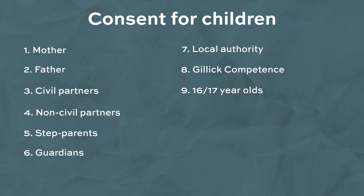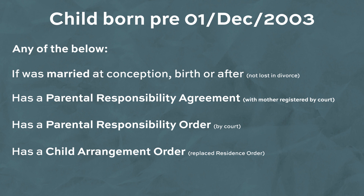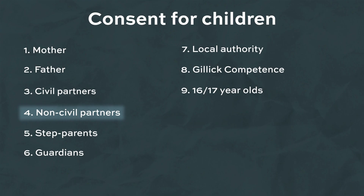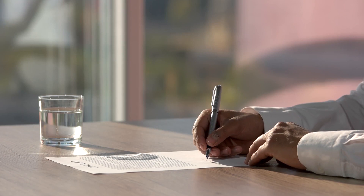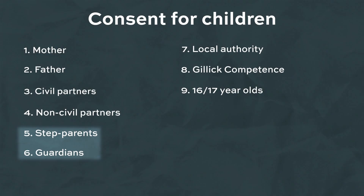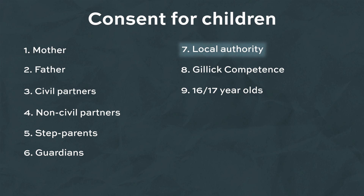Now we'll move on to who can consent for children under 16. There are nine groups. The first is the child's mother. The second is the child's father if he was on the birth certificate. The third is civil partners, who need to have been civil partners at the time of conception via donor insemination or fertility treatment. Fourth, non-civil partners can obtain consent by applying for a parental responsibility agreement or by both registering at birth. Fifth and sixth are step-parents and legal guardians, who need a parental responsibility agreement or a court order. The seventh is the local authority, whose consent is joined with the parents if there's a court order, but if the child is in local authority care voluntarily, the parents remain responsible.